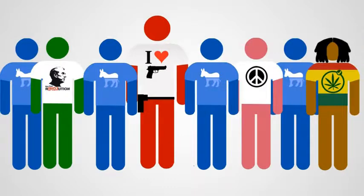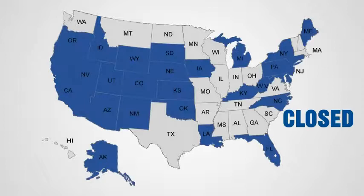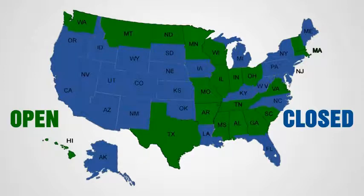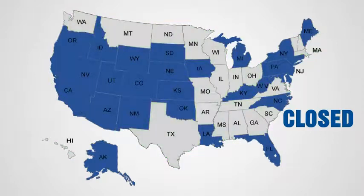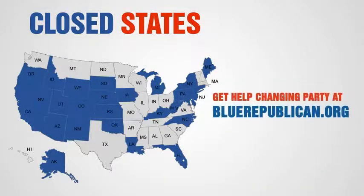Again, here's the list of states. If you live in one colored blue, you're in a closed state and must register Republican as soon as possible. If you live in one colored green, you do not. But don't forget to go to the primary or caucus on the right day. Finally, how do you go about changing your registration? In many states you can do it online. In others, it's a bit more tricky. You can find detailed information about registering Republican in your state on the BlueRepublican.org page.